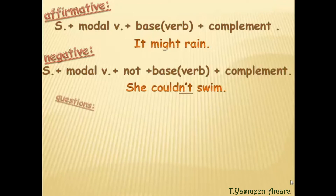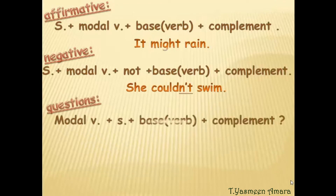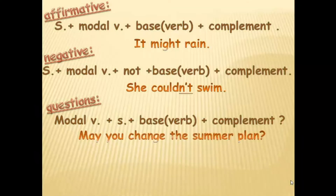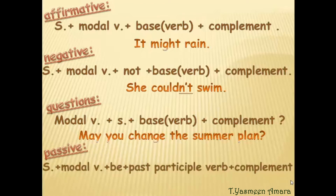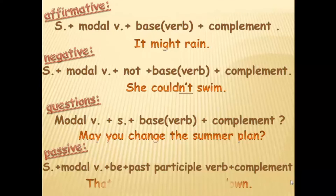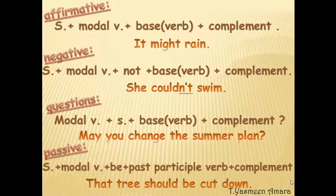For questions: modal verb + subject + base form of the verb + complement, with a question mark at the end. Example: 'May you change the summer plan?' For passive sentences with modal verbs: subject (object in the active sentence) + modal verb + be + past participle + complement. Example: 'That tree should be cut down.'